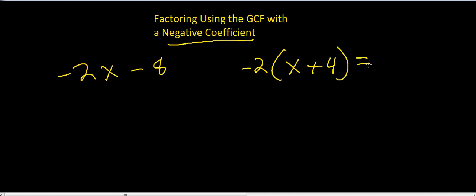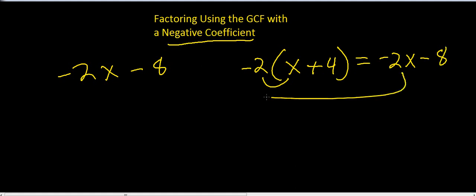To check it, you just distribute out this 2. Negative 2 times x is negative 2x, and negative 2 times 4 is negative 8, which is what we started with.